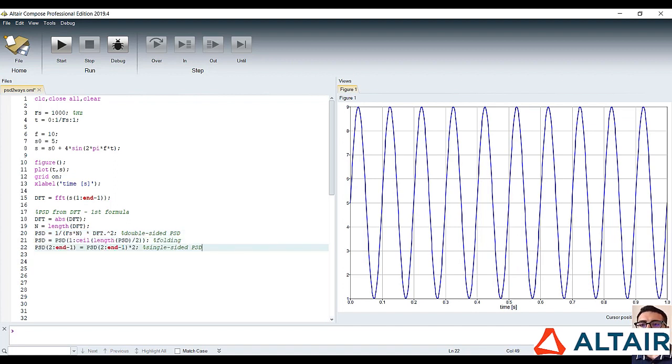We can now fold it. So we consider just half of it, and we multiply by two every component, except for the mean value and the Nyquist frequency one. Finally, let's build the frequency array and plot the power spectral density.